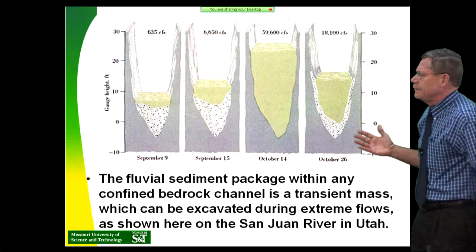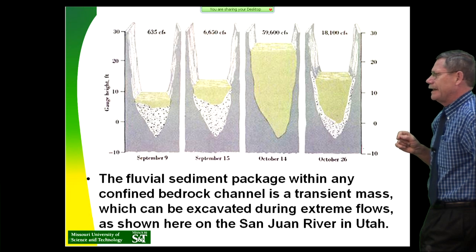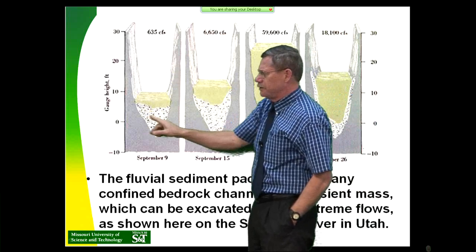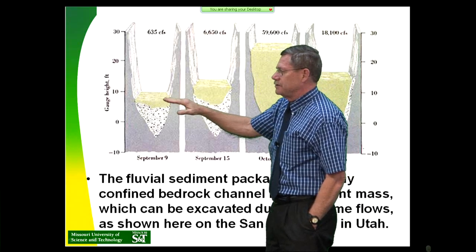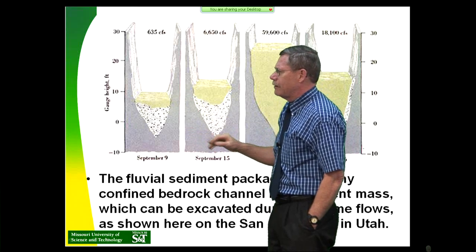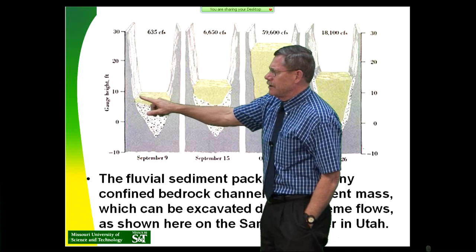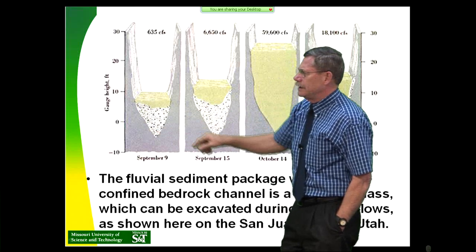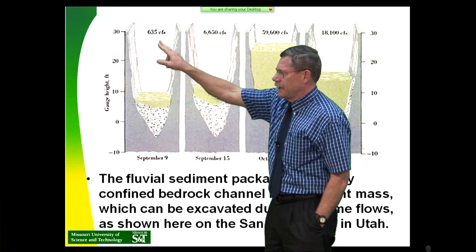Looking at confined bedrock channels, this is some of Luna Leopold's work from the late 1940s and 1950s on the San Juan River near Mexican Hat, Utah. This is a major perennial channel in a semi-arid environment - one of the major tributaries of the Colorado River, now where Lake Powell is. This cross-section is greatly vertically exaggerated. You can see the channel fill, which is quite considerable - something on the order of 15 feet of channel fill over a bedrock channel. On September 9th, the base flow was 635 cubic feet per second, pretty similar to the Gasconade River near us.